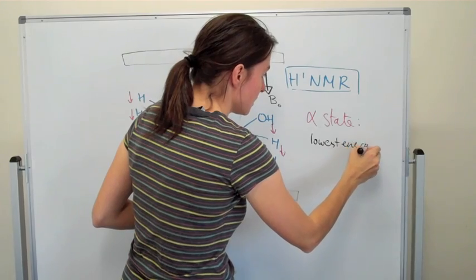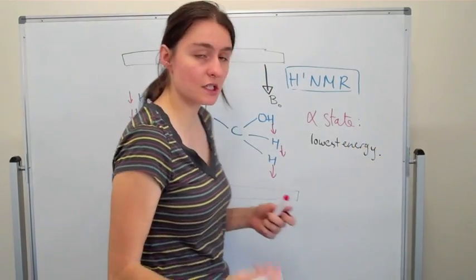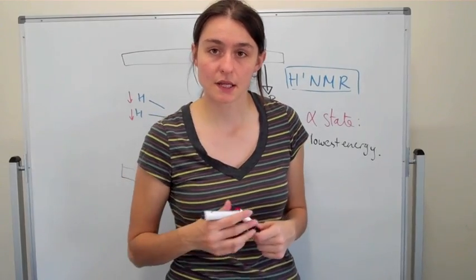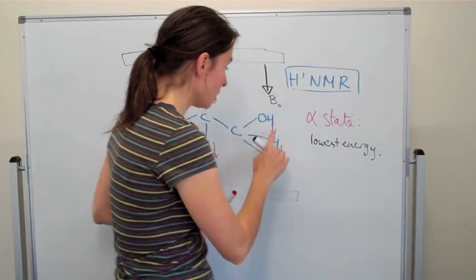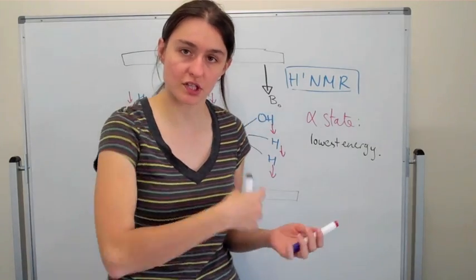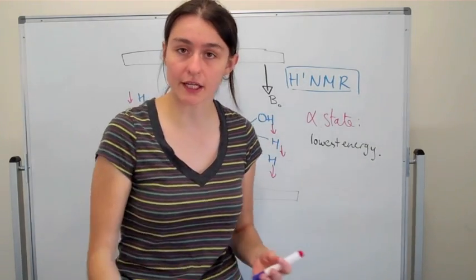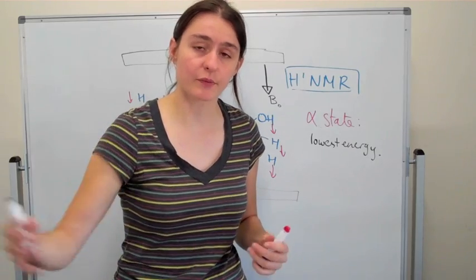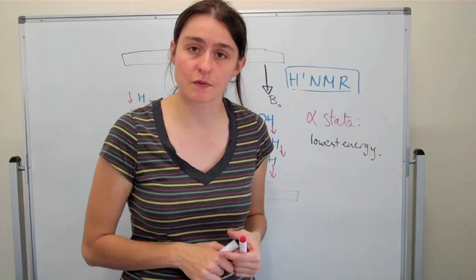So if it's the lowest energy, basically that means that all of these at the moment will be in alpha state because if you're in a river and you just get swept away with that river you're not fighting against it, you're being swept away, so it doesn't take much energy to be swept away by a river.